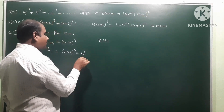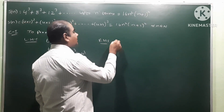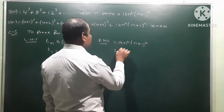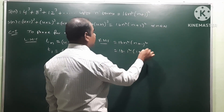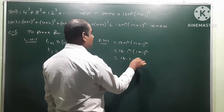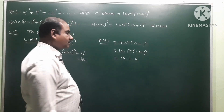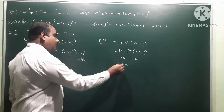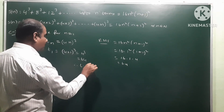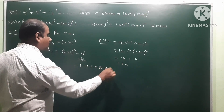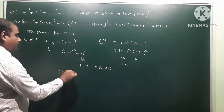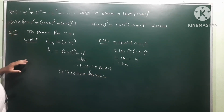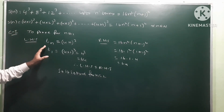For the RHS, substituting n=1 into 16n²(n+1)², we get 16 × 1² × (1+1)² = 16 × 1 × 4 = 64. Since LHS equals RHS, it is true for n=1. Case 1 is verified.